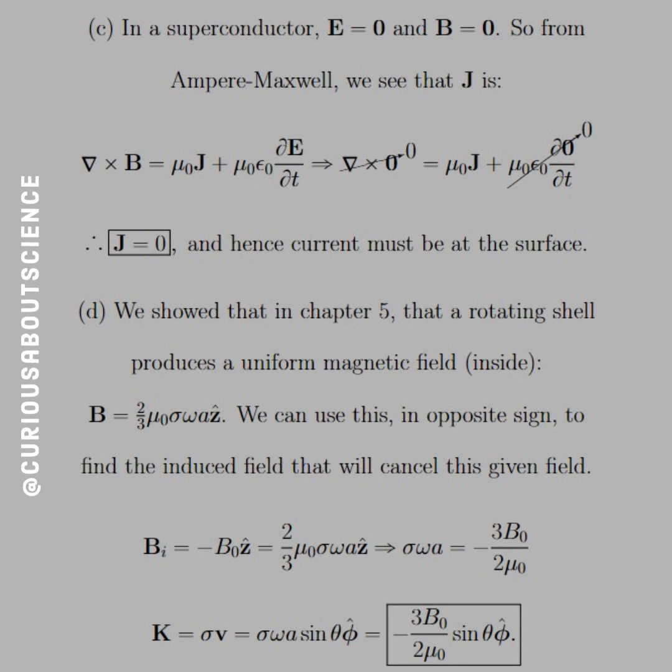All right, so part D, we showed that in chapter 5 that a rotating shell produces a uniform magnetic field inside: B equals 2/3 μ₀σωA z hat. Again, this is a spinning spherical shell. A is the radius of the shell, and sigma is the charge distributed on it, while omega is the angular velocity.